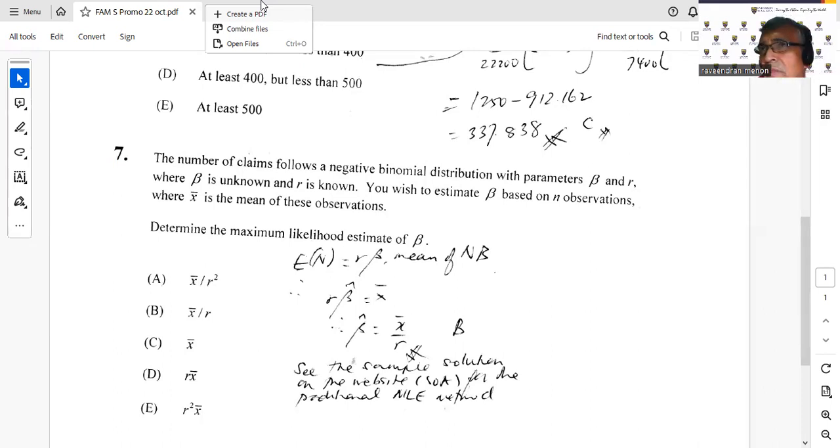But here I'm saying question number 7, you don't have to do all that. Because you know the mean of the negative binomial distribution with parameters R and beta would just be R beta. So the mean of your negative binomial distribution with parameters R and beta would be just R beta. And the MLE of the mean will just be x bar. So we can write R beta equals to x bar. Therefore, my beta head will be just x bar over R. And your correct response will be B. And we're done. So I've made a comment there. See the sample solution on the SOA website. They have used the traditional MLE method. It's fine as well. You'll get the same answer. Beta head will be x bar over R.